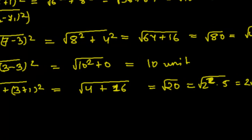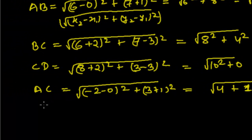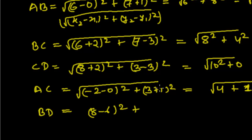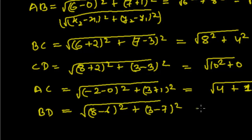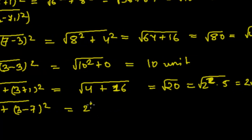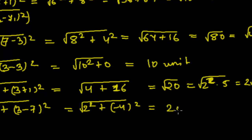Now let's find BD. Difference of x-coordinates: (8 - 6) = 2, squared, plus difference of y-coordinates: (3 - 7) = -4, squared. So √(2² + (-4)²) = √(4 + 16) = √20 = 2√5 units. We got BD = 2√5 units.